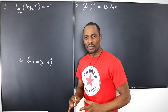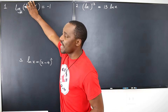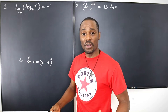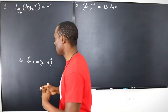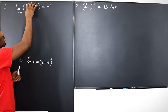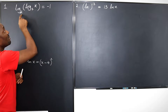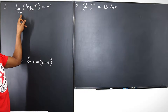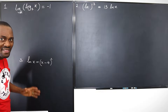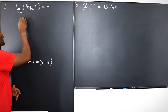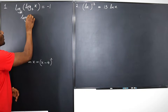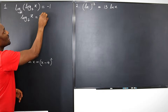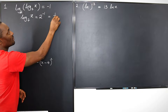So the first question: the logarithm of an argument to base 2 is negative 1. We apply the definition of logarithms — the logarithm of an argument to a base is always the power to which you must raise the base to obtain the argument. So we can say that the logarithm of x to base 7 equals 2 to negative 1, which is the same thing as 1 over 2.